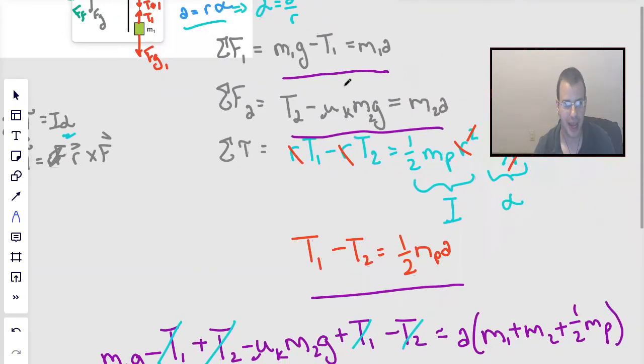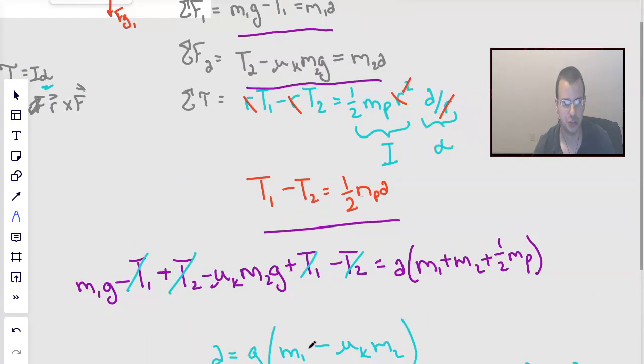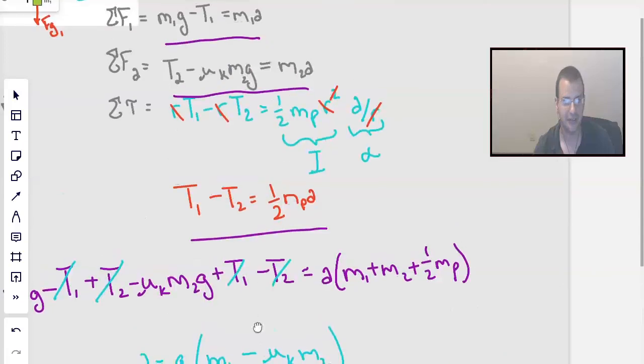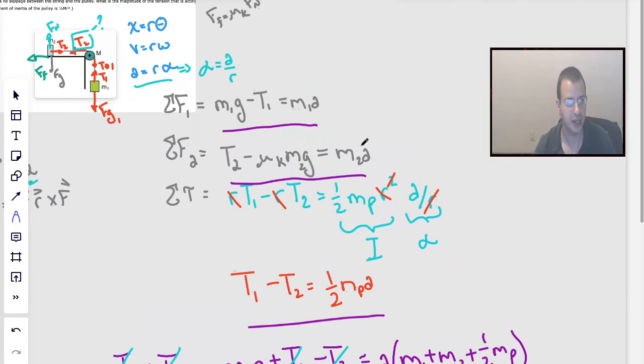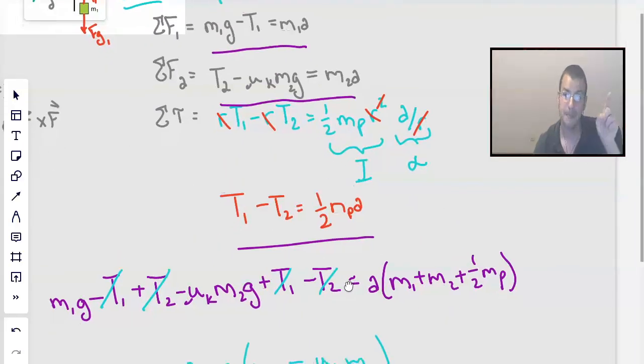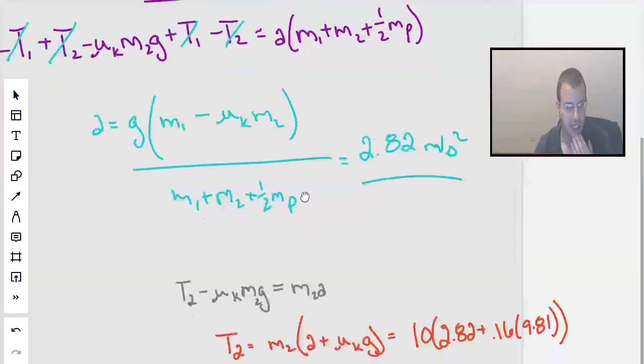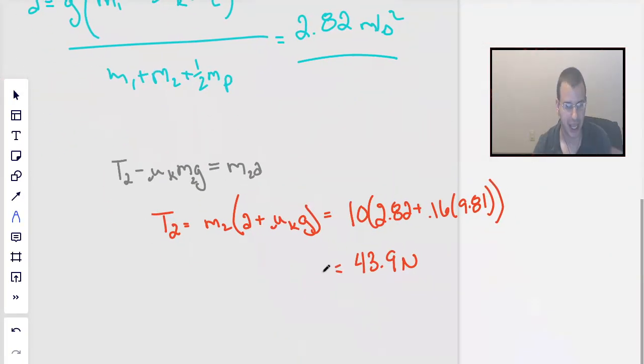We do a whole bunch of math. We basically set everything up so we could just add the three systems of equations together. Tension 1, tension 2 all canceled out. Found our acceleration, then went back and found a specific equation that had tension 2 in it. Plugged back in our acceleration and bam, we get an answer of 43.9 Newtons. Hope that helped. See you next time. Bye.